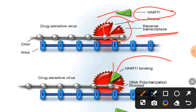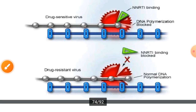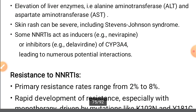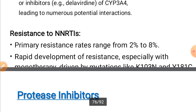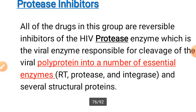When this drug binds to the enzyme, it blocks the enzyme further, inhibiting the polymerization process, and thereby blocking virus replication. You can review the adverse effects. Resistance is 2 to 8 percent.